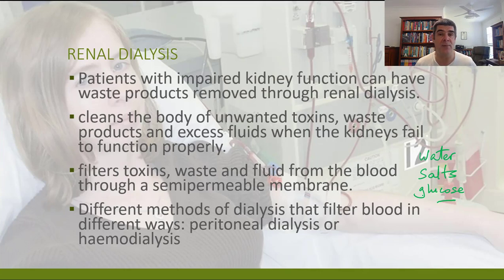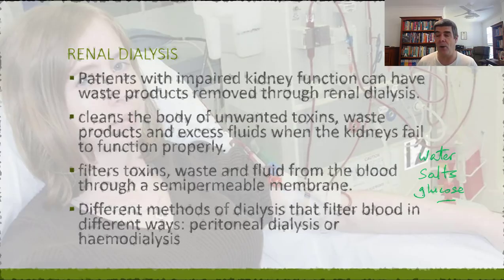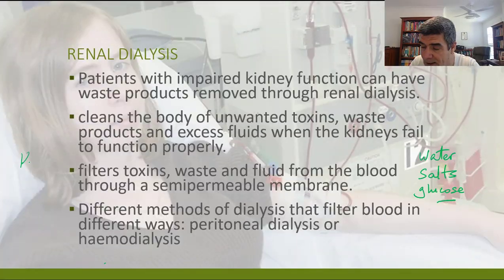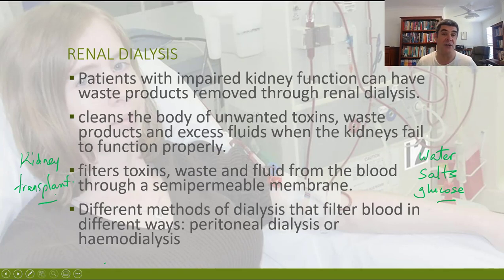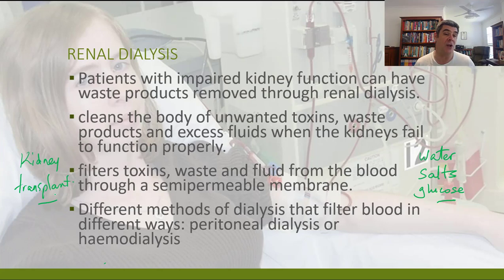When patients are unable to filter their blood effectively, there has to be some alternate way to do that. There are a couple of options — one is a kidney transplant. Transplants always have associated issues, including carefully matching the donor and usually suppressing the immune system to avoid rejection of the organ, which can open the patient up to other complications. So one other potential option for patients with kidney disease is renal dialysis.